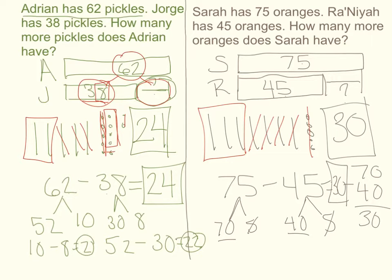Now that my numbers both match, I can safely say that in my case Adrian has 24 more pickles than Jorge. Please write the sentence using your two character names and your unit being oranges on your paper. Your sentence might look something like: Sarah has 30 more oranges than Raniya. Those are two great strategies for solving these problems. If you had any problems with this page, please go back and watch this section again, or write down questions so we can talk about them in the next class.